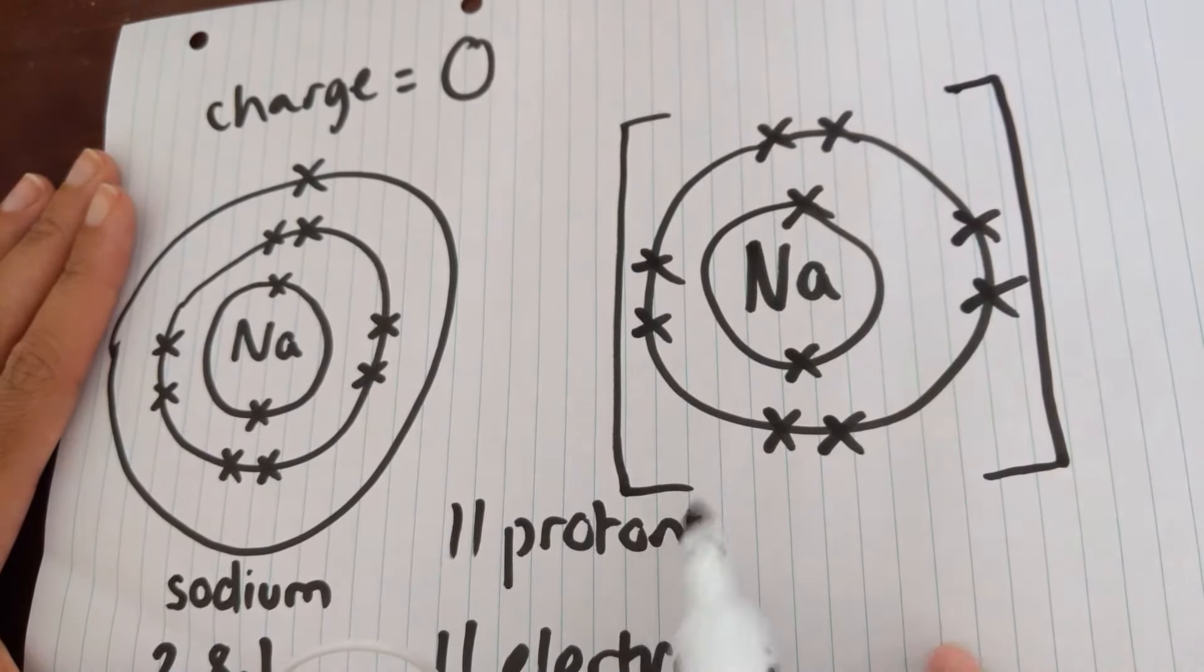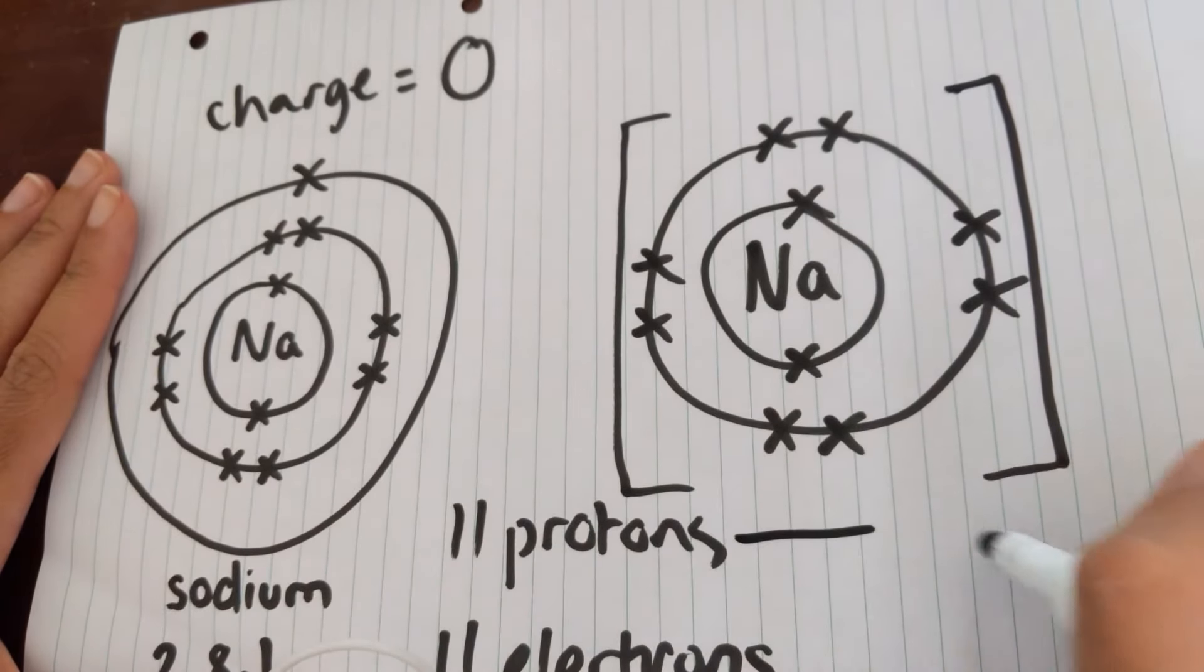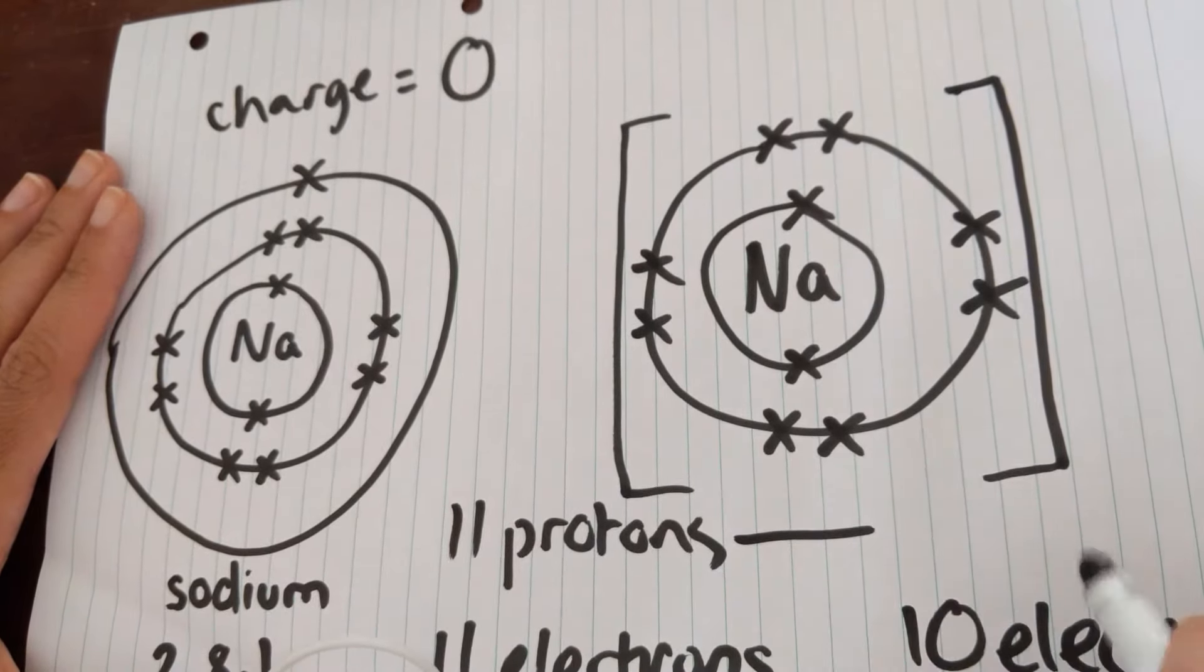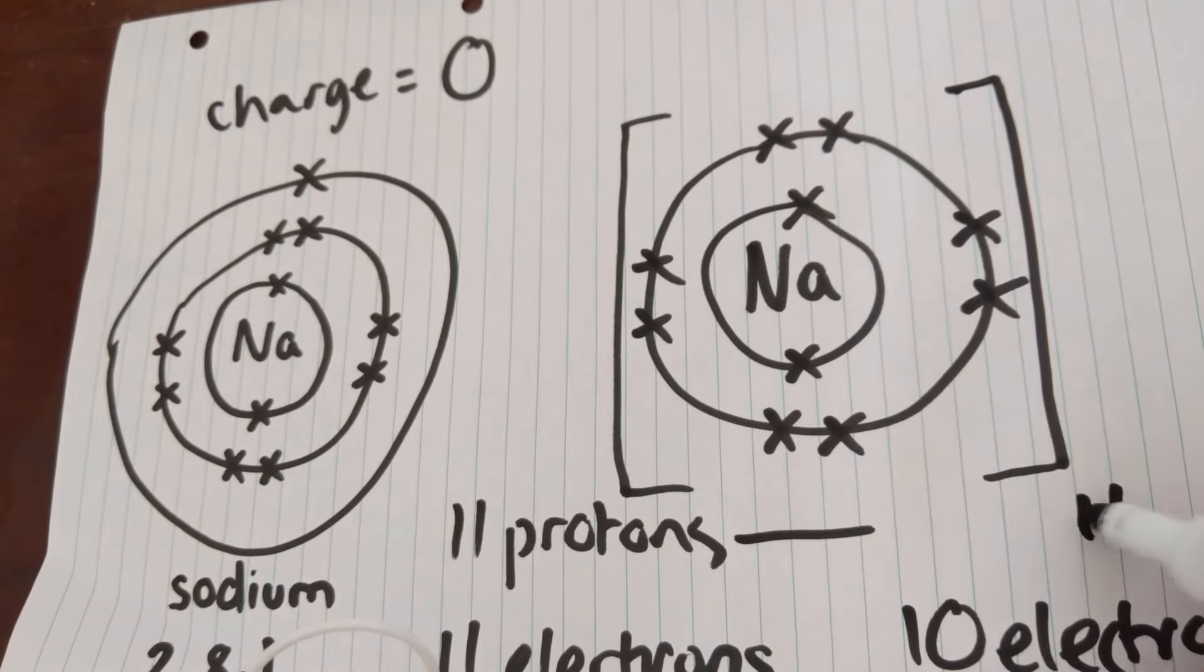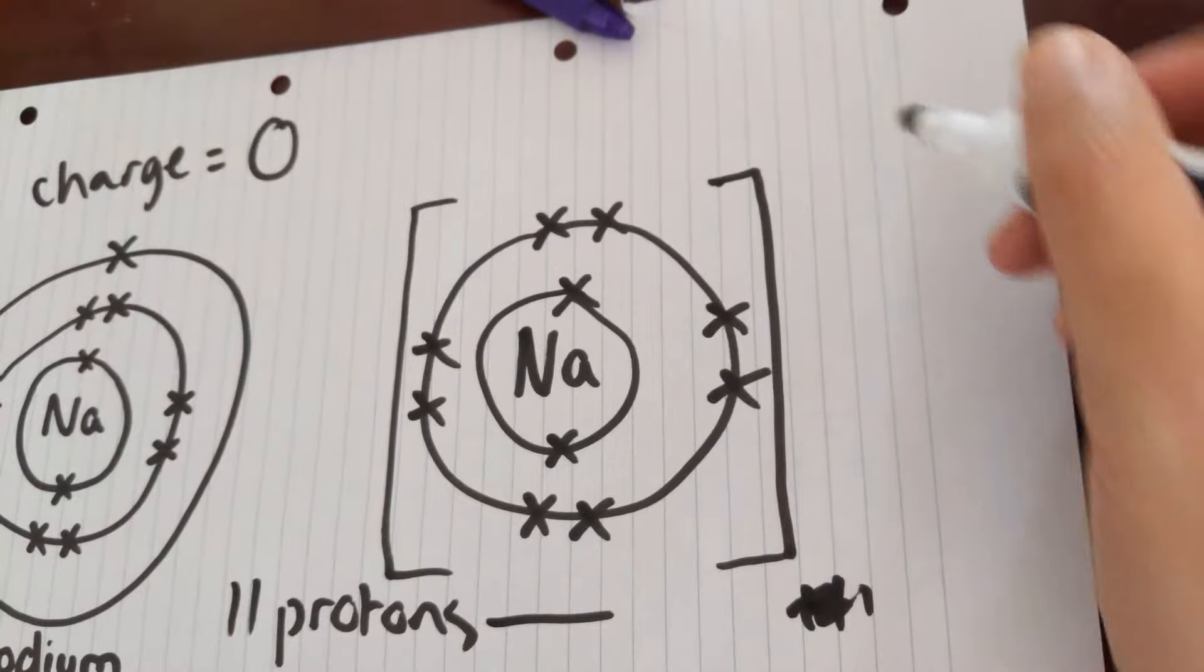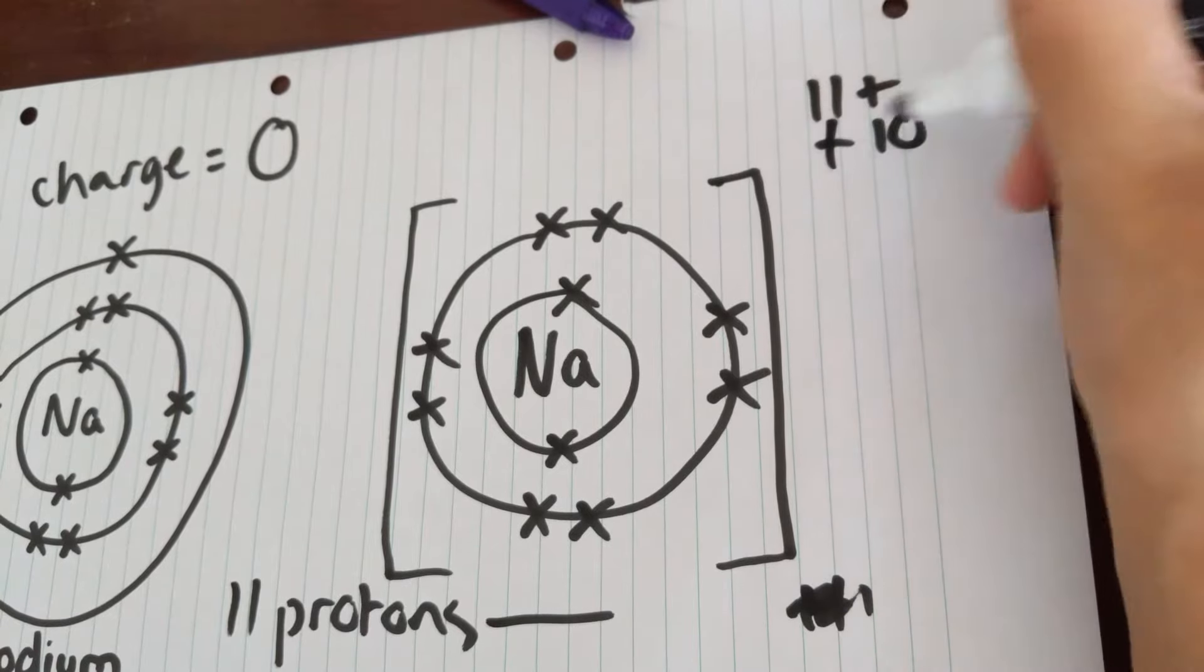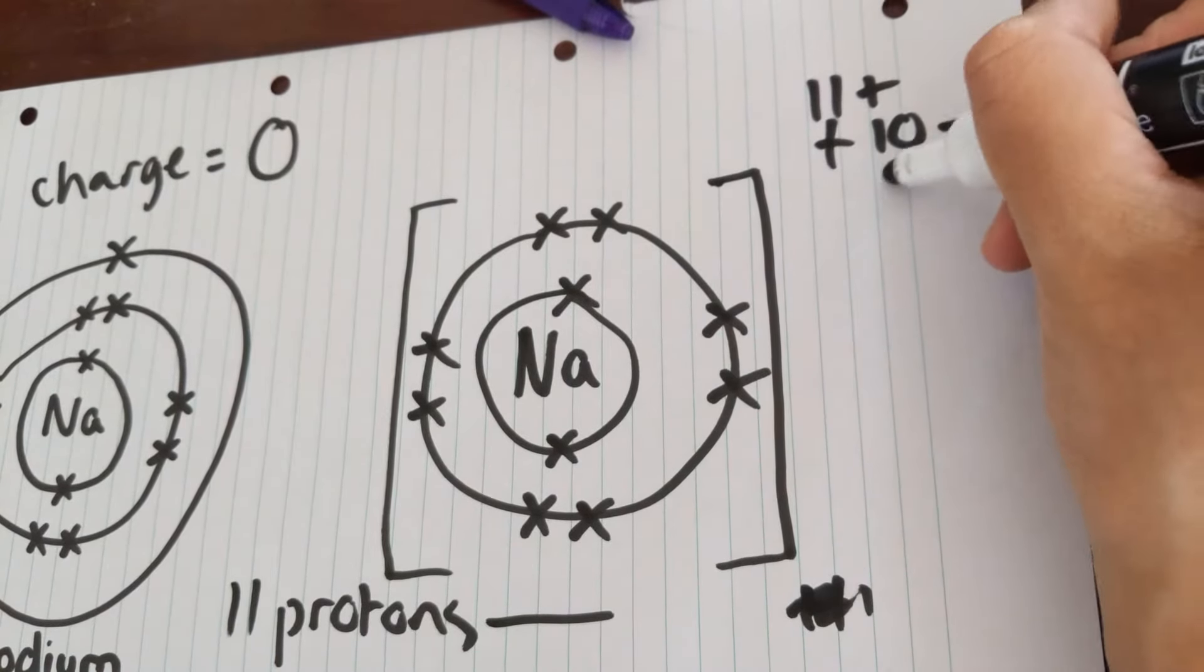So if this ion, it now has, it still has 11 protons, but now it has only 10 electrons. We can work out what the overall charge will be because the 11 positives, sorry if that's written stupidly, 11 positive minus 10, oh sorry, plus 10 negative is going to give us one positive.